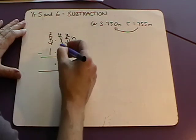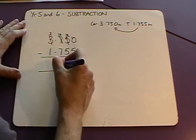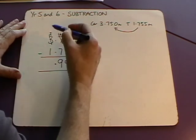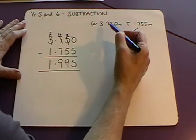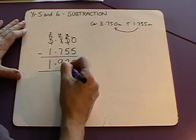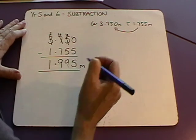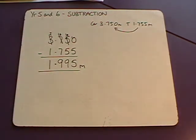Decimal point. I forgot to put that in to begin with, but luckily I've remembered it now. And then we've got two subtract one is one. So the difference between the car and the trailer is 1.995 metres. And that's how we subtract in years five and six.